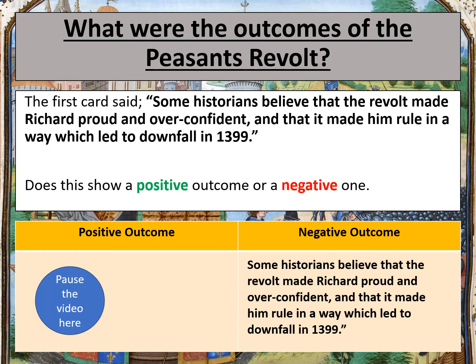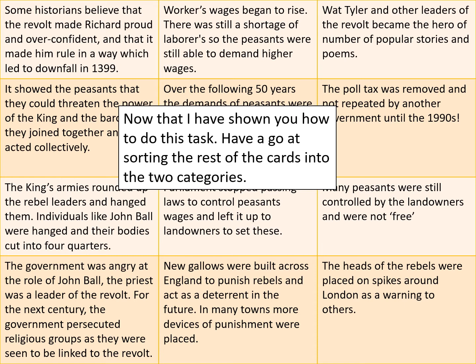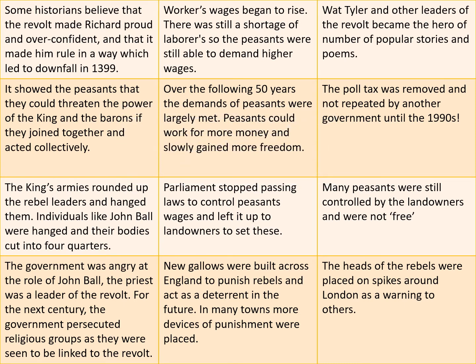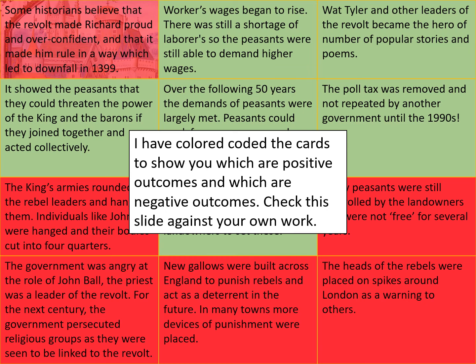Pause the video here to look at your table with the cards that we have just done together. Now that I have shown you how to do this task, you are going to have a go at sorting the rest of the cards into the two categories. Here are the cards that you are going to be sorting. Remember, we have done the first one together. I will highlight the first card so you know that it has already been done. Pause the video here to give yourself time to read through the cards and sort them into your table. I have colour-coded the cards to show you which are the positive outcomes and which are the negative — the positive outcomes are colour-coded as green and the negative outcomes as red. Check this slide against your own work to make sure that you have got the right cards in the right section. Pause the video here to allow yourself time to check your work against this slide.